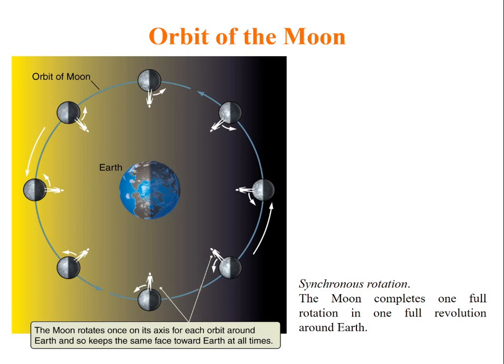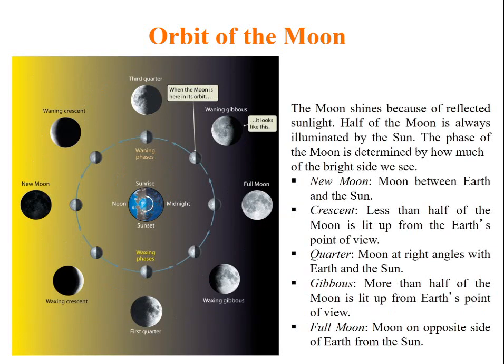Since Moon keeps the same face towards Earth all the time, we call this synchronous rotation. The Moon completes one full rotation in one full revolution around the Earth. Hence, Moon always faces towards Earth and we always see the same face every time.